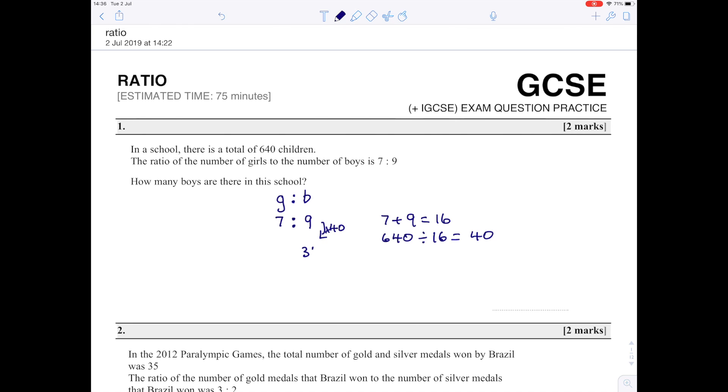As a quick check, the number of girls would be 7 times 40, which is 280, and 280 plus 360 does give you the 640 children. So 360 boys.